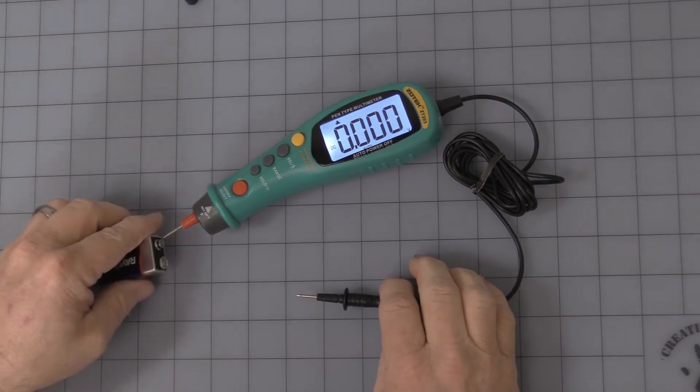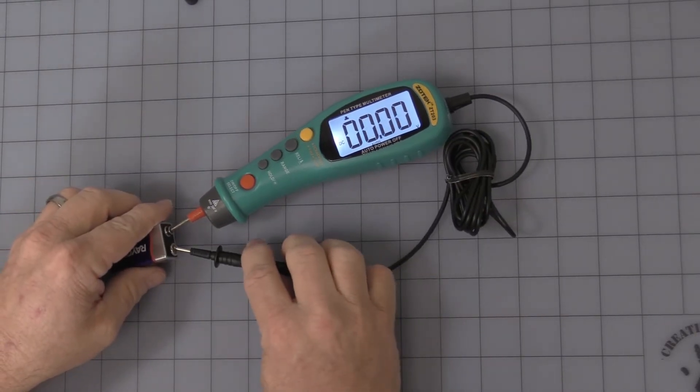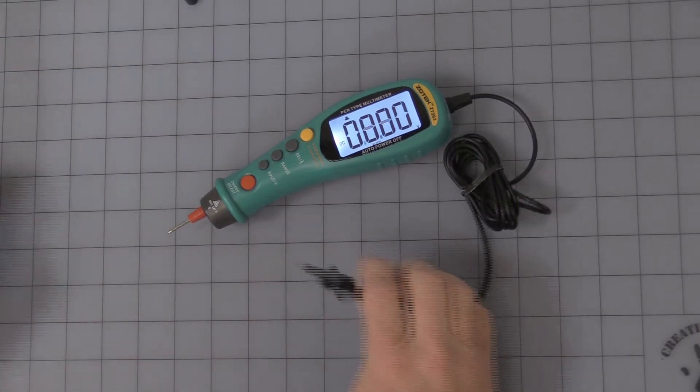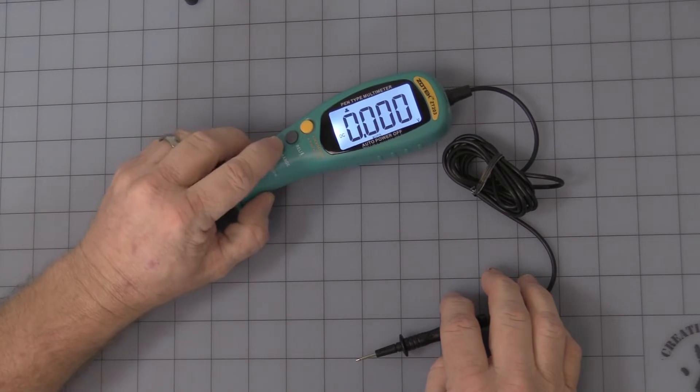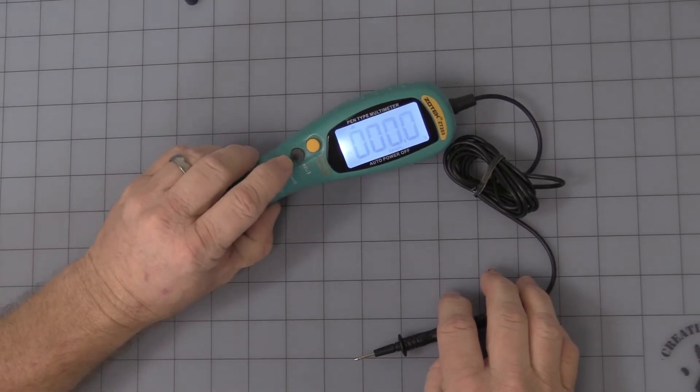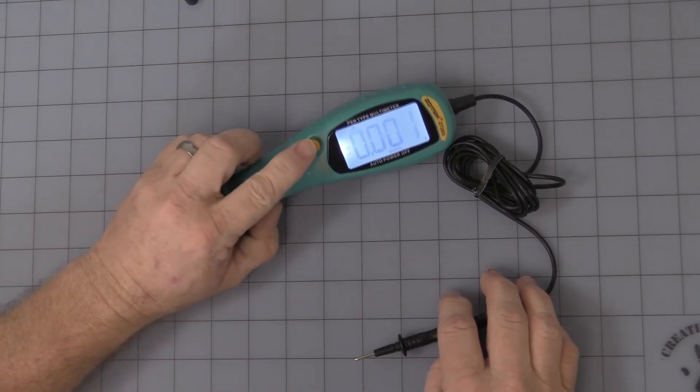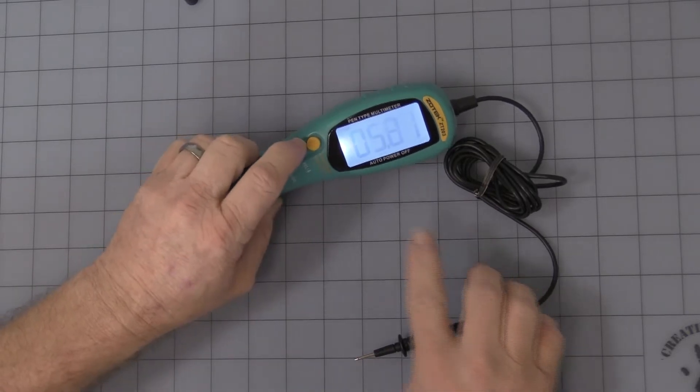Just quickly to show you just a 9 volt battery. It is auto ranging. If you click on the range button, you can change the manual and stay in a certain range. But most people like auto ranging.